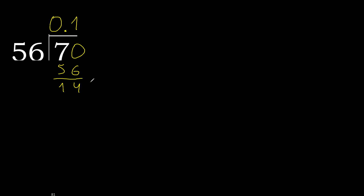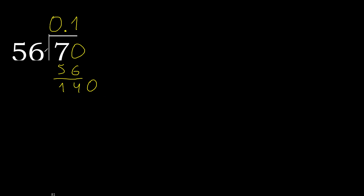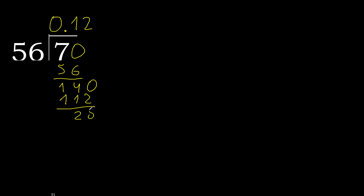There is no number, therefore always complete with 0. 0 point. Bring down 140. 56 multiplied by 3 is greater; multiply by 2 — is not greater. Subtract. Complete.